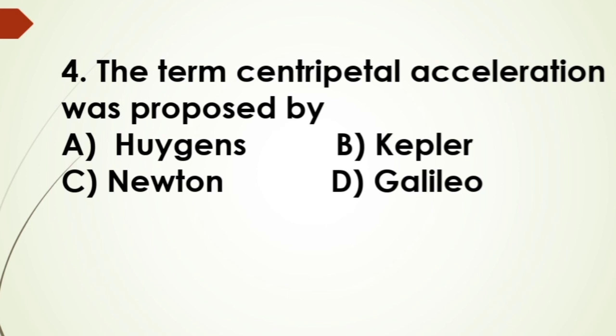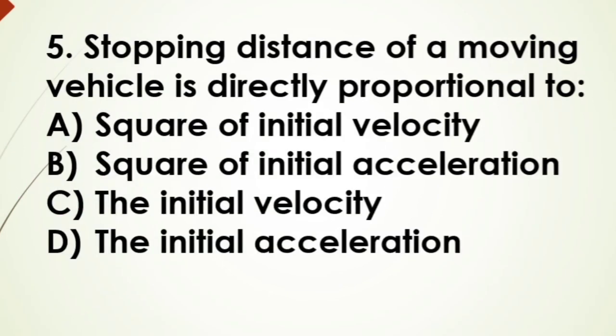Now the fourth question: the term centripetal acceleration was proposed by - options: A) Huygens, B) Kepler, C) Newton, D) Galileo. And the answer is option C, Newton. Fifth question: stopping distance of a moving vehicle is directly proportional to - A) square of initial velocity, B) square of initial acceleration, C) the initial velocity, D) the initial acceleration. And the answer is the square of initial velocity, option A.